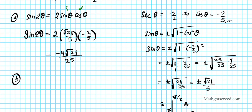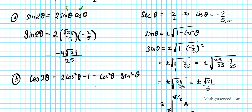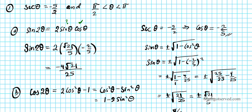Now for part B, we want to find cos 2θ. To find cos 2θ, we have three options: we can use 2 cos²θ minus 1, or cos²θ minus sin²θ, or 1 minus 2 sin²θ. The least processed component we have is cosine — cosine is negative 2 over 5, easily taken from the original problem.